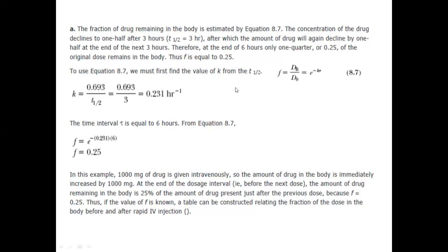We can find k from the half-life. Since the drug declines every three hours, T½ = 3 hours. The formula is k = 0.693 / T½ = 0.693 / 3 = 0.231 hour inverse.